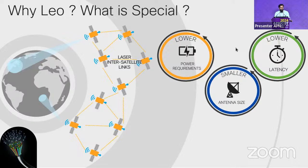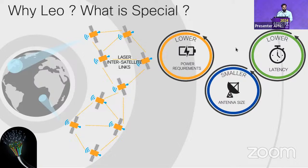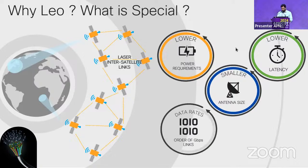The antennas needed to communicate with LEO satellites are very small — barely the size of a pizza box. From the days when only the military used large antennas, this technology has now come to end users with very compact hardware.